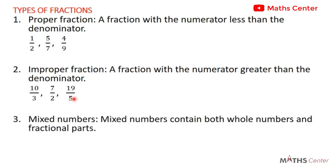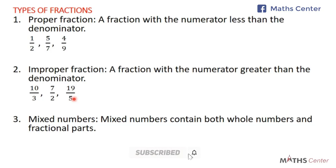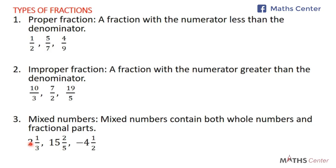We want to consider another type, which we are going to call mixed numbers — some books refer to them as mixed fractions. Mixed numbers contain both whole numbers and fractional parts. The fractional parts are proper fractions. For example, we have 2 whole number 1 over 3, where 2 is the whole number part and 1 over 3 is the fractional part. You can see that 1 over 3 is a proper fraction because the numerator is less than the denominator.